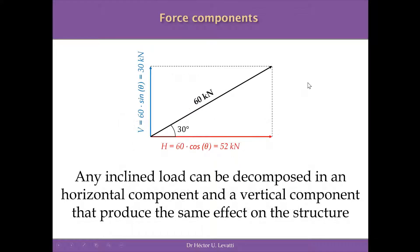The first thing we have to do when we have an inclined load is to decompose it into two components: the horizontal component and the vertical component. The horizontal component equals 60 kilonewtons multiplied by cosine of 30 degrees, which is 52 kilonewtons going to the right. The vertical component is 60 kilonewtons multiplied by sine of 30 degrees, equal to 30 kilonewtons acting upward.